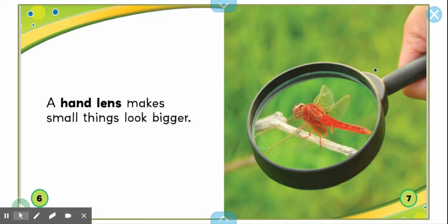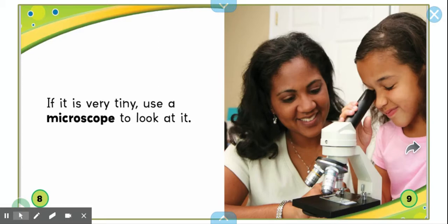A hand lens or magnifying glass makes small things look bigger. If it is very tiny, use a microscope to look at it.